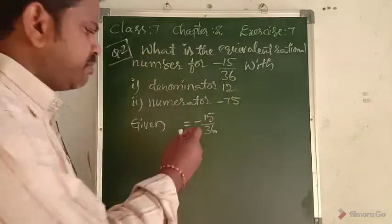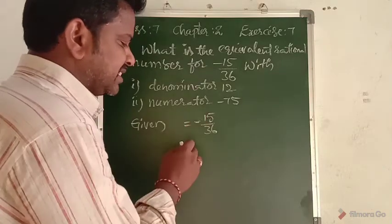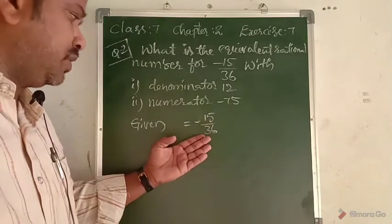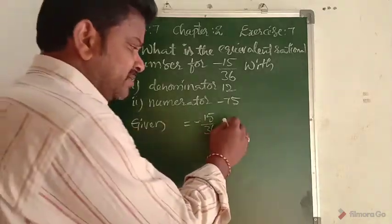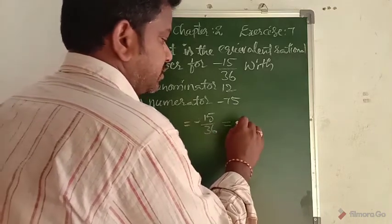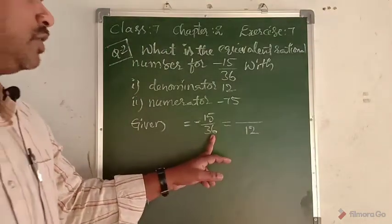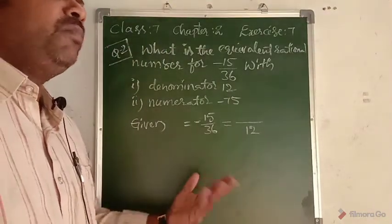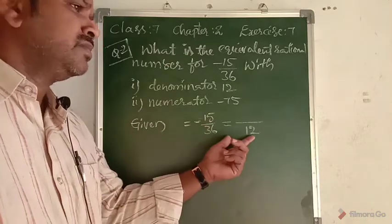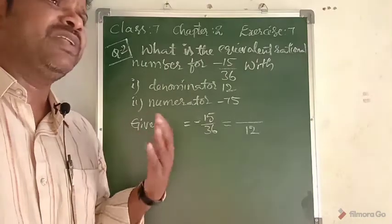So the given rational number is minus 15 by 36, and we have to write the equivalent rational number with denominator 12. This means 36 is going to be reduced to 12. As I told you, you can write equivalent fractions not only by multiplication but also by division.